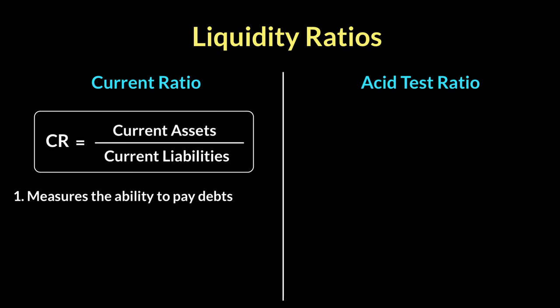Whatever the answer to the current ratio is, it's always presented as a ratio. So if the answer is 4, it's 4 is to 1. If the answer is 2, it's 2 is to 1. It's always a ratio, and the second part of the ratio should be simplified to the number 1.